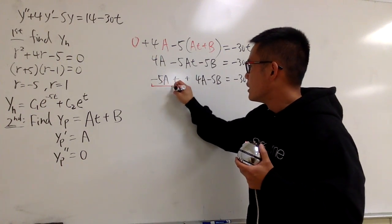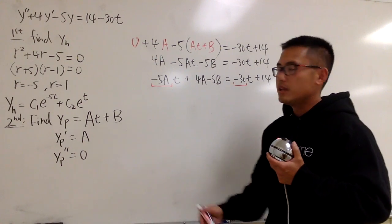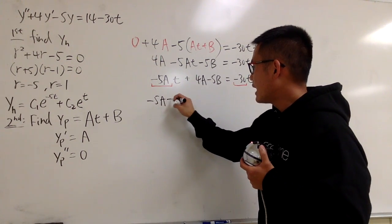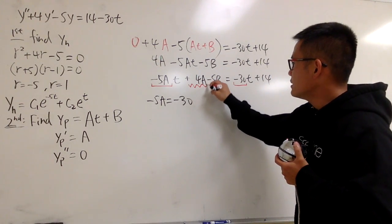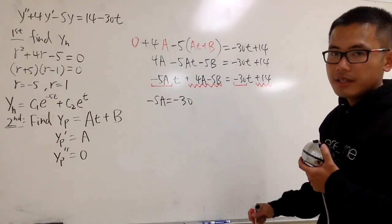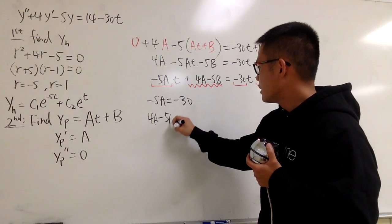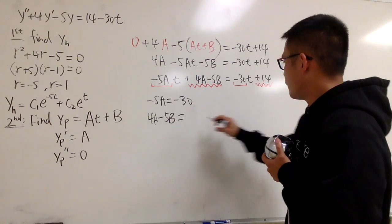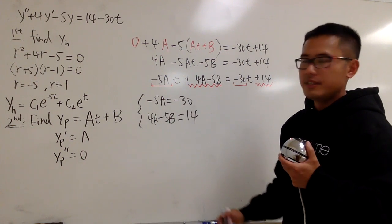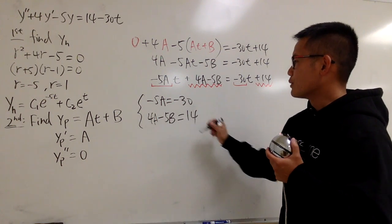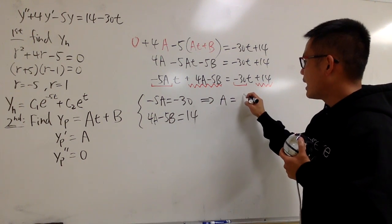Okay, this is the only term that has the t. So let me just write it down, negative 5At, and this and that are just a constant, so let me just put this down as plus 4A minus 5B, and this is still equal to negative 30t plus 14. And now, equal coefficients. This must be the same as that, because this is the number in front of the t. So first thing, negative 5A has to be negative 30. Next, this is the constant part, it must be 14, right here. So we must have 4A minus 5B equal 14. System of equations. Negative 5A is equal to negative 30. We can just go ahead and divide by negative 5 on both sides. This will tell me right away that A is equal to positive 6.